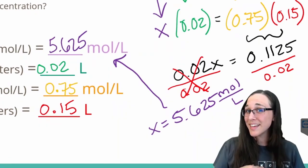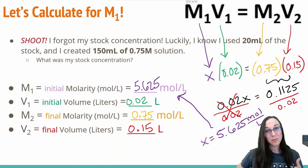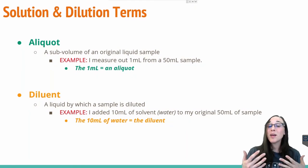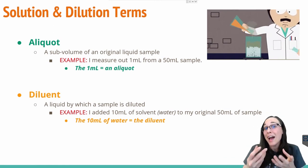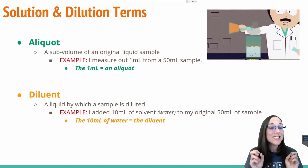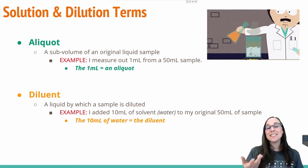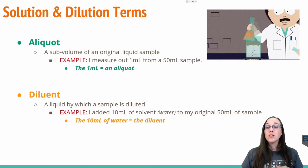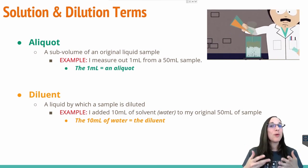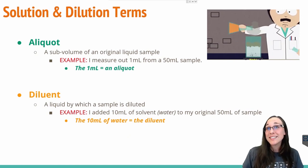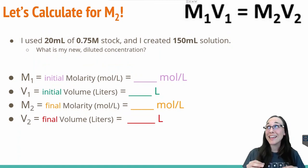Phew, good thing that this dilution formula saved the day. Before you try the next problem, there's two words you should be familiar with when using dilutions. An aliquot is a sub volume of an original liquid sample. So for example, if I measure out one milliliter from a 50 milliliter sample, that one milliliter that I took out from the original sample is an aliquot. A diluent is the liquid by which the sample is diluted. So from my original 50 milliliter sample that I took one milliliter aliquot from, if I were to add say 10 milliliters of water to that, then the 10 milliliters of water would be the diluent.